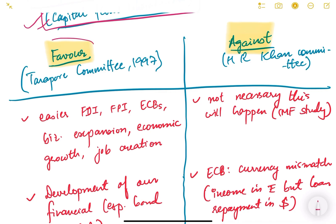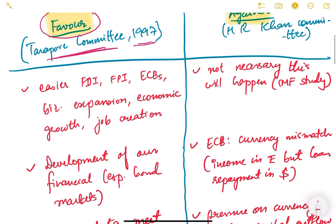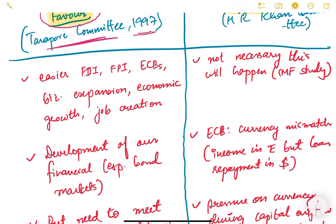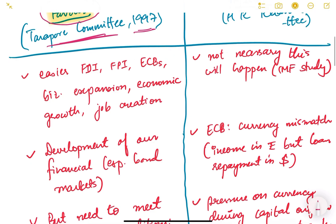The arguments in favor mostly derive from the report of the Tarapur Committee of 1997. We will see what this committee said about capital account liberalization and why we should liberalize our capital account completely.